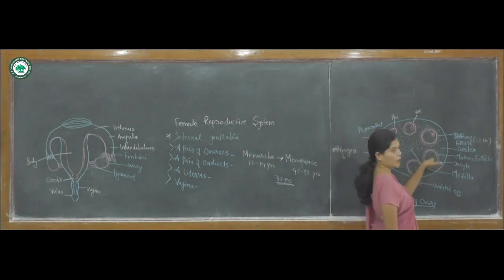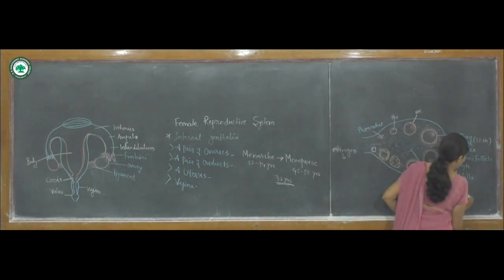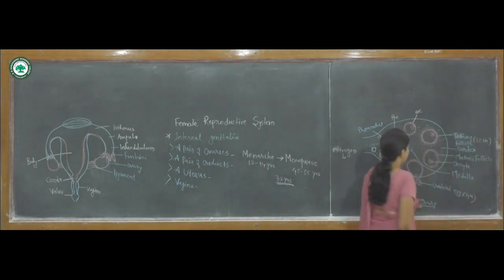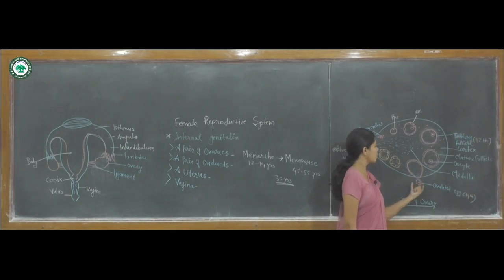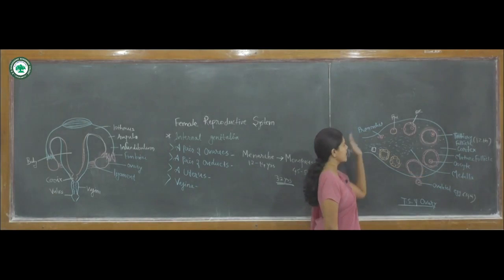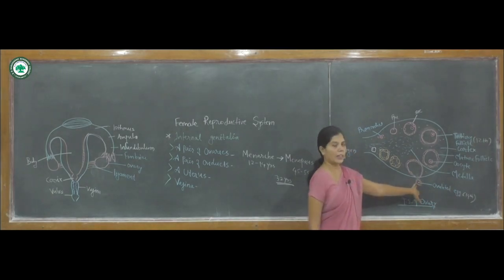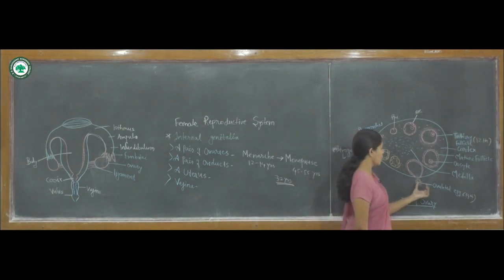After the formation of the Graafian follicle, at day 14, the egg comes out from the Graafian follicle. This process is known as ovulation. Ovulation of the egg is carried out at the 14th day of the menstrual cycle, and these cyclic changes take place inside the TS of ovary each menstrual cycle.